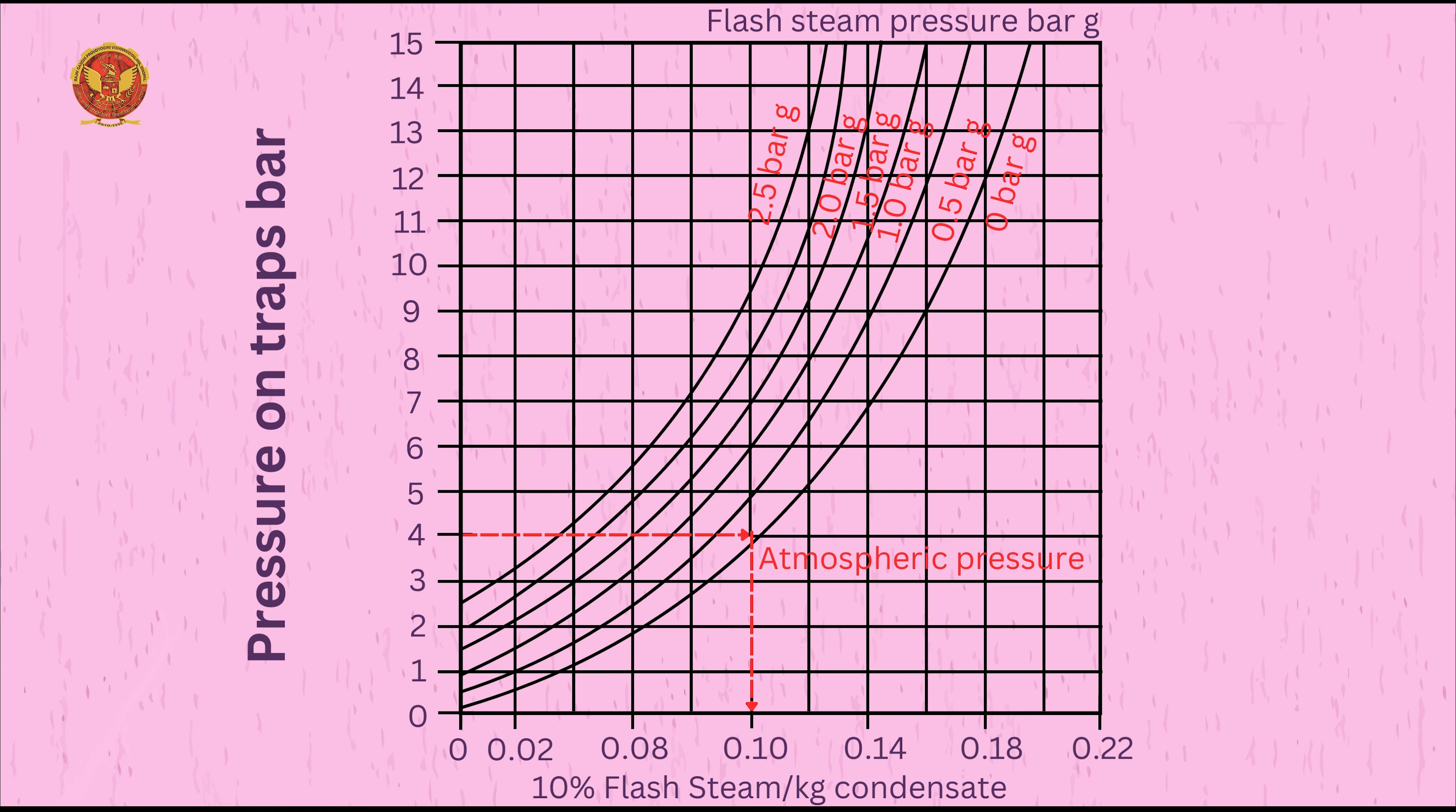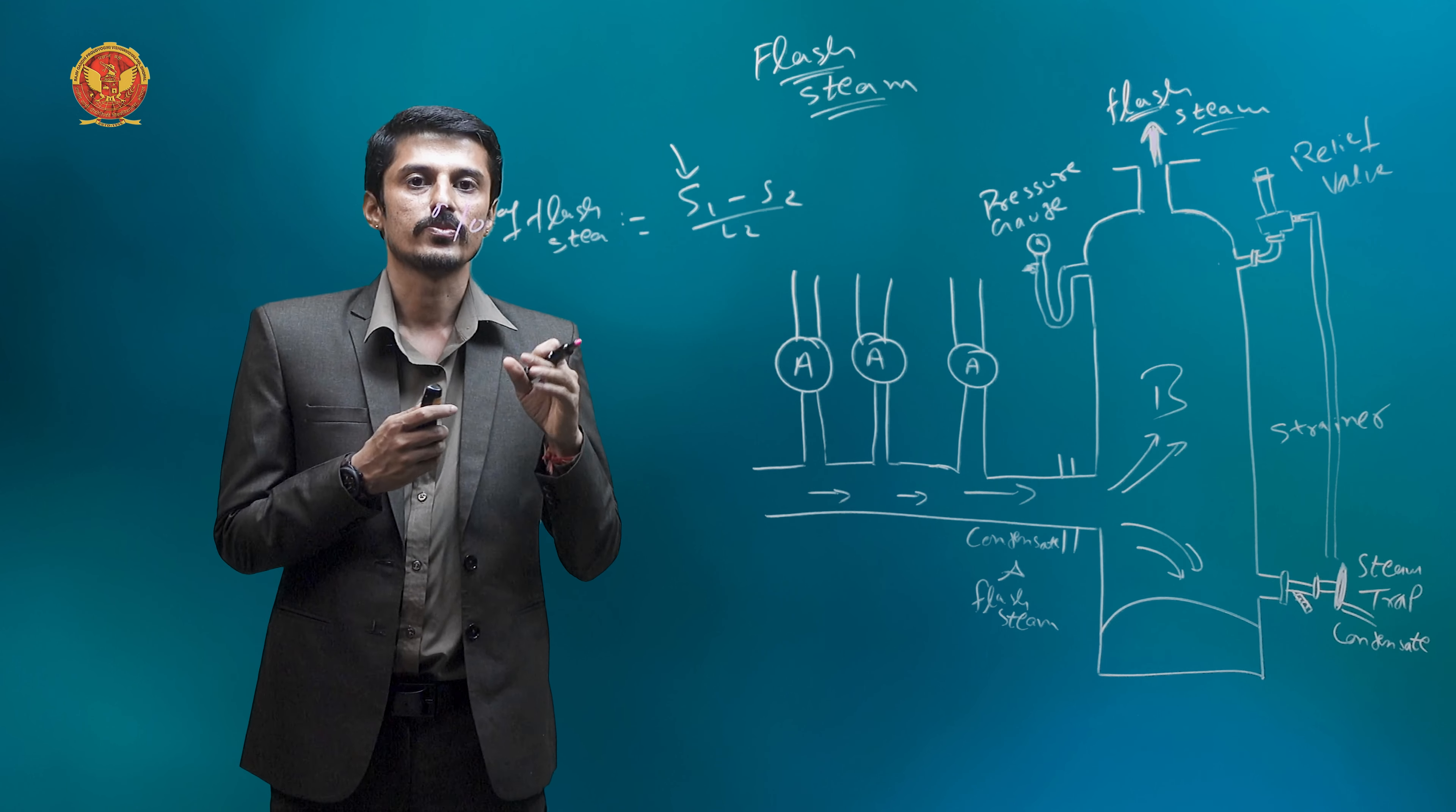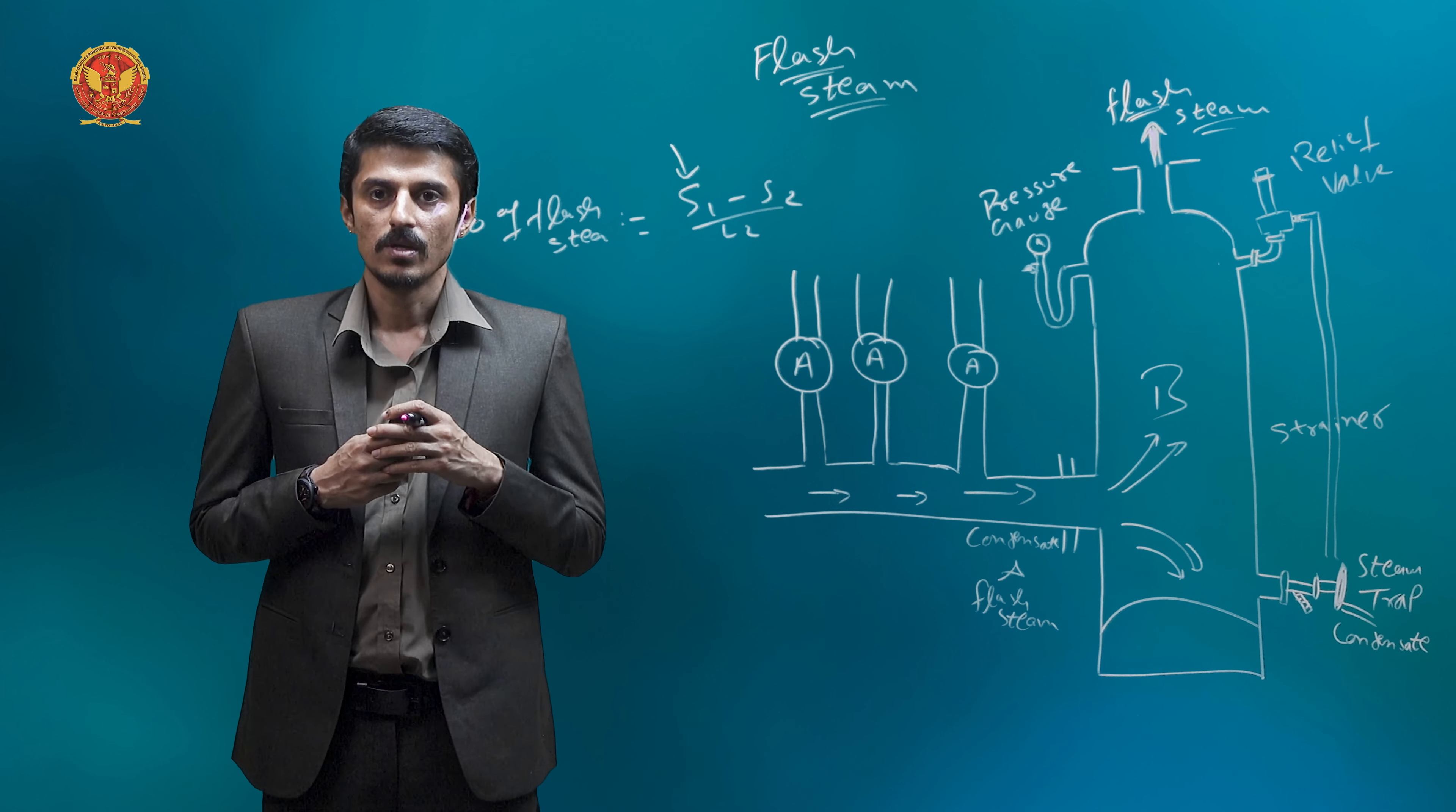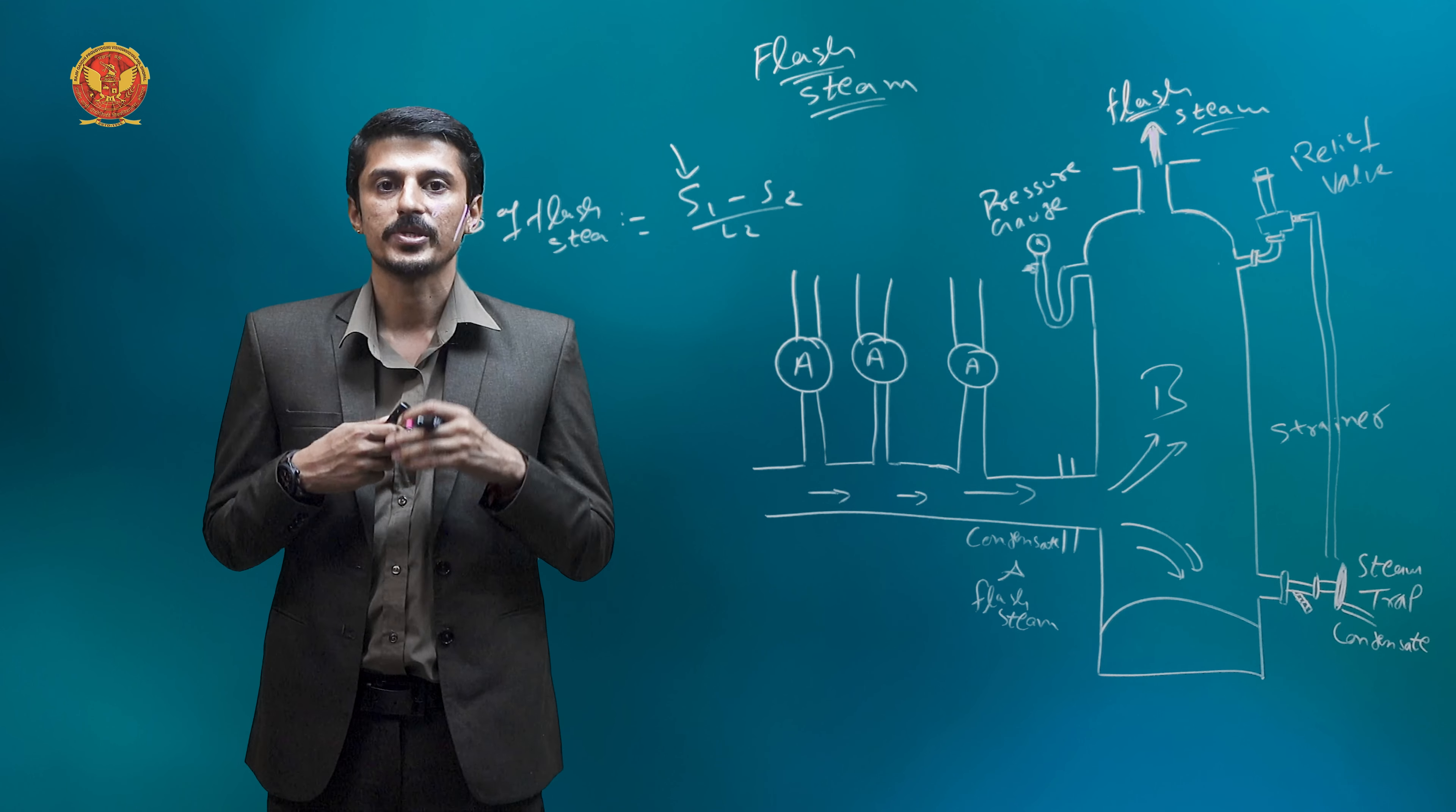Flash steam can also be used on low pressure appliances like direct injection and can replace an equal quantity of live steam that would be otherwise required. So live steam can also be used on low pressure where the requirements are required. The demand for flash steam should exceed its supply so that there is no build-up of pressure in the flash vessel and the consequent loss of steam throughout the safety wall.